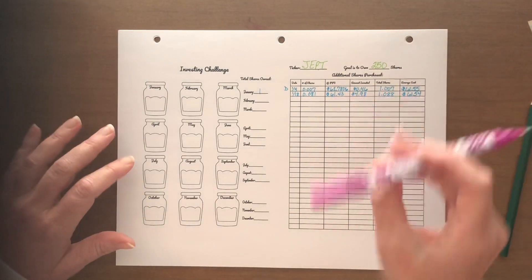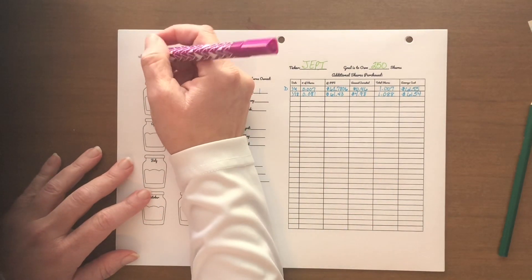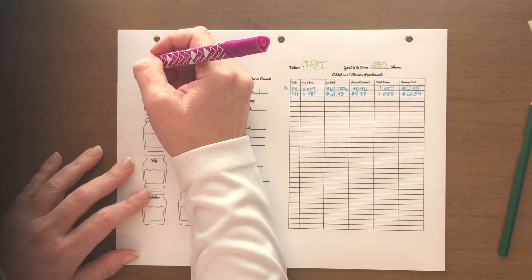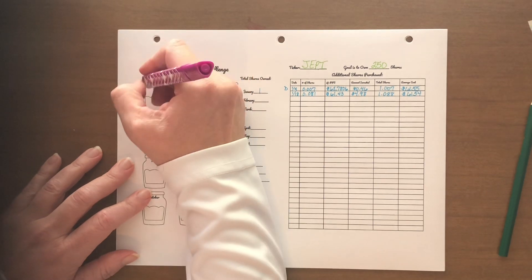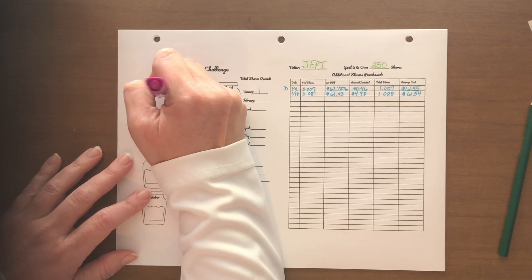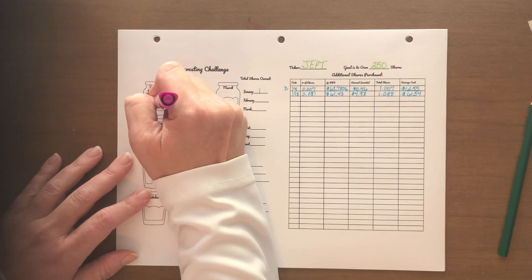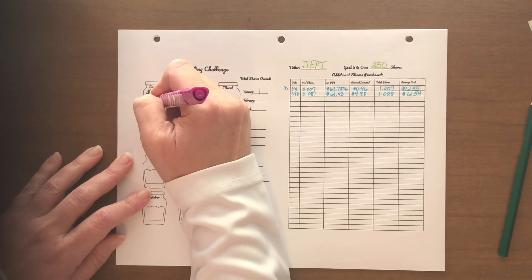And then the last one that I was able to increase this week was JEPI, J-E-P-I. It's a JPMorgan stock. And it was $4.98 was invested in it. And it was little. JEPI is currently running about $61.